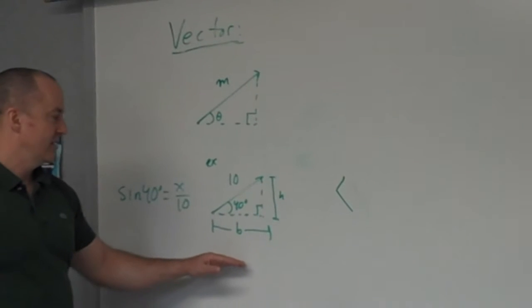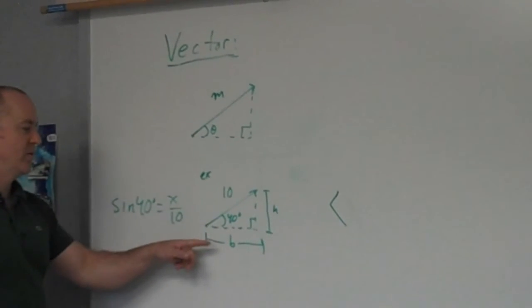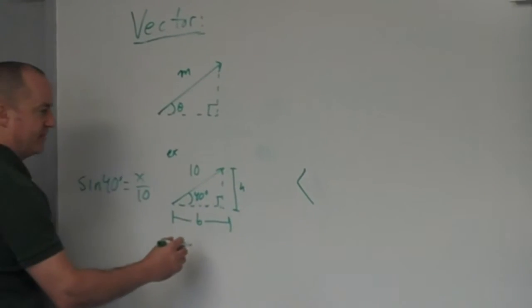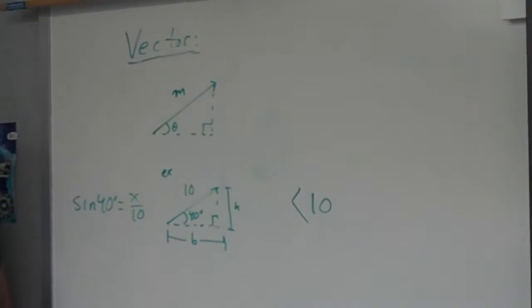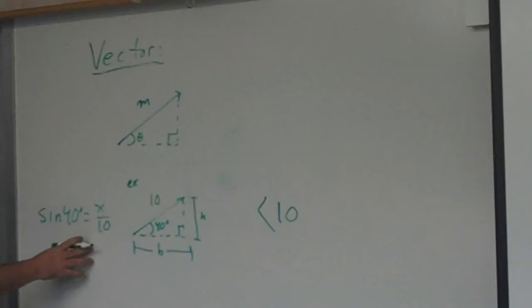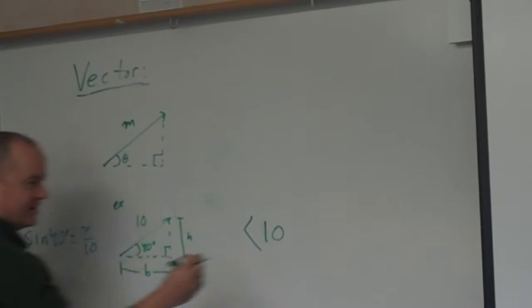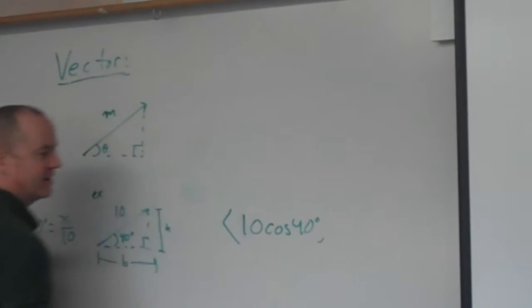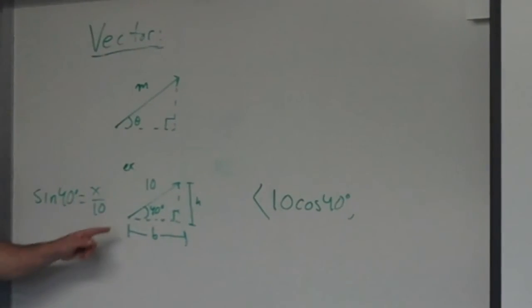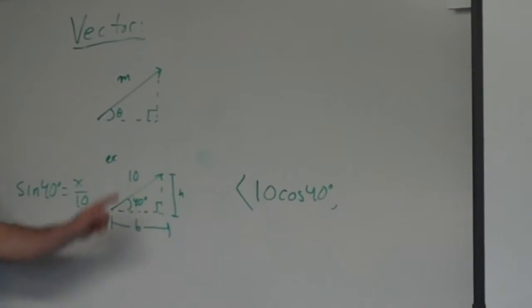If this is 10 sine 40, what's the bottom going to be? The adjacent side of the triangle. Cosine B over 10. Yeah, so B is just going to be 10 what? 10 cosine 40. Excellent.